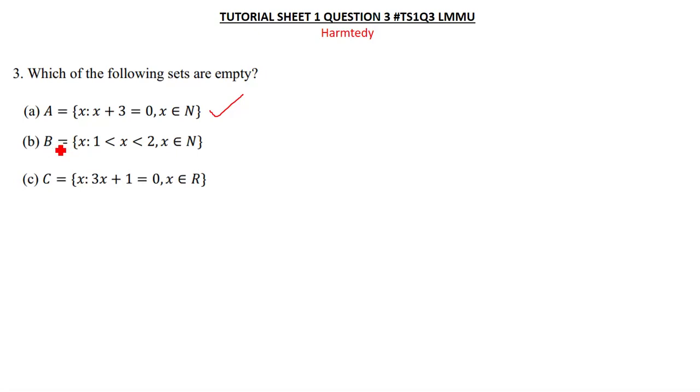The question is saying B is equal to x such that 1 less than or equal to x less than or equal to 2, where x is a member of natural numbers. So we find the natural numbers that are between 1 and 2. Do we have any natural number between 1 and 2? No, we don't. So this is an empty set too.